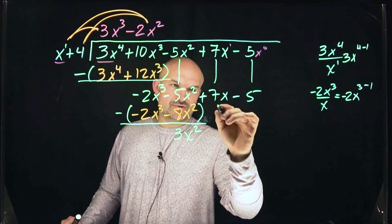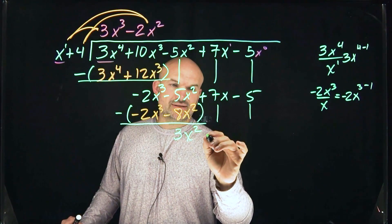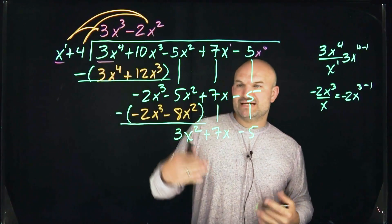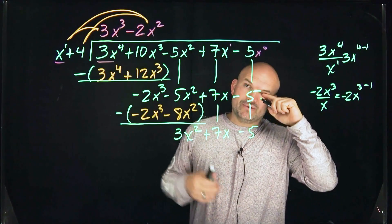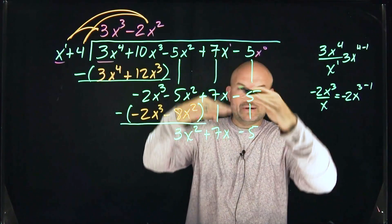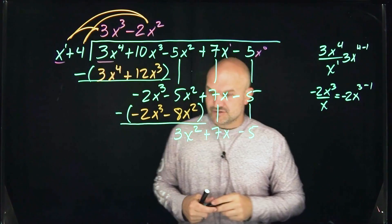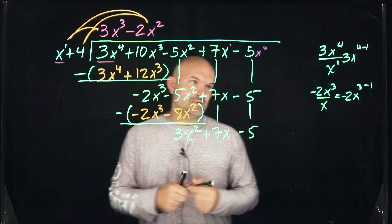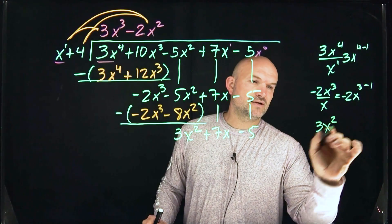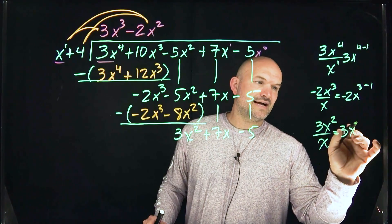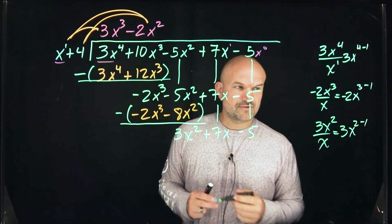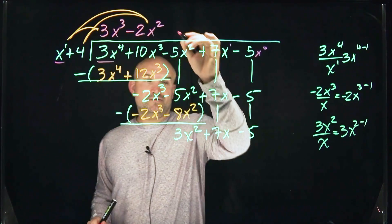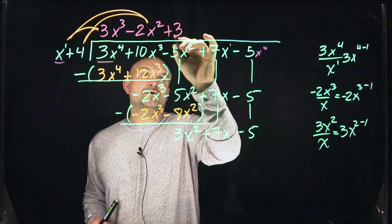Since these are subtracted by 0, you can just go ahead and subtract them from 0 or bring them down. So that's going to give me a positive 7x minus 5. Now let's go through the process one more time. So now we're on round three. x divides into 3x squared. So 3x squared divided by x, that is going to be 3x to the 2 minus 1, which is 3x to the first power. So how many times does x divide into 3x squared? That's going to be a positive 3x.